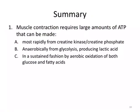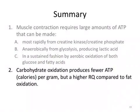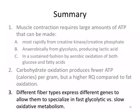In summary: muscle contraction requires lots of ATP that can be made most rapidly from the creatine kinase/creatine phosphate system. Anaerobic glycolysis is also rapid, and it produces lactic acid, which is largely converted by the liver back to glucose by gluconeogenesis. For sustained activity, we need aerobic oxidation of both glucose and fatty acids. Carbohydrate oxidation produces fewer ATP per gram but has a higher respiratory quotient compared to fat oxidation. Finally, different muscle fiber types express different genes to allow them to specialize in fast glycolytic versus slow oxidative metabolism.